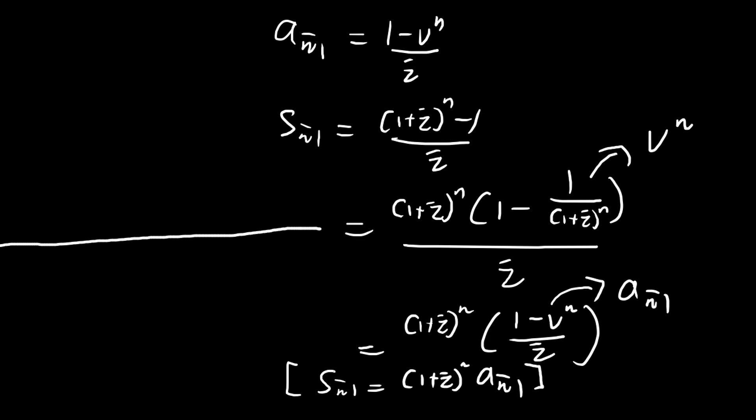So essentially what it means is that, given this timeline, the payments evaluated at time 0 is equal to a n. And if we want to find Sn, that's just equal to taking this value and then compounding it all the way to time n. And that would give us this expression here. So this is kind of useful. Sometimes you want to switch between the two. And this will give you the two terms.